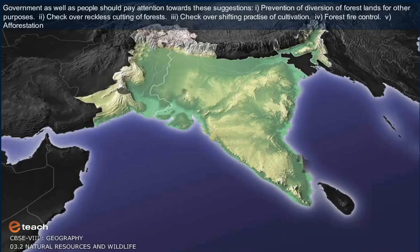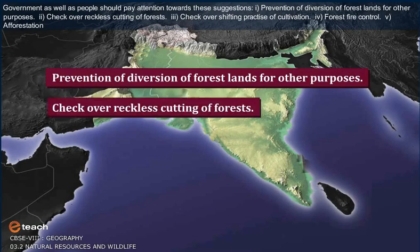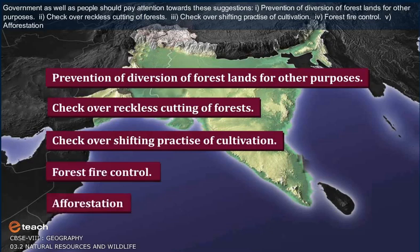Government as well as people should pay attention towards these suggestions: prevention of diversion of forest lands for other purposes, checking reckless cutting of forests, checking shifting practice of cultivation, forest fire control, and afforestation.